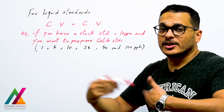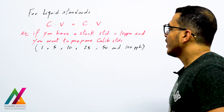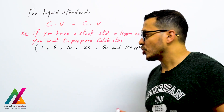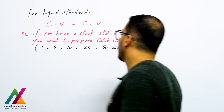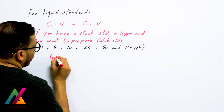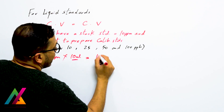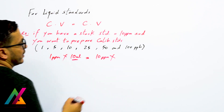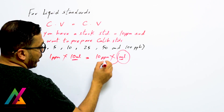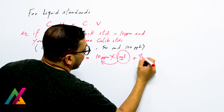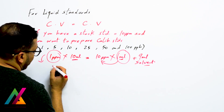C₁V₁ for the standard you want to prepare equals C₂V₂ for the stock standard you have. For example, if you have a stock standard of 10 ppm and you want to prepare calibration standards of 1, 5, 10, 25, 50, and 100 ppm, you will dilute the 10 ppm stock. You will use a 10 ml flask: add 1 ml from the 10 ppm stock plus 9 ml of suitable solvent to get 1 ppm.